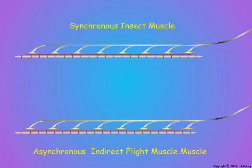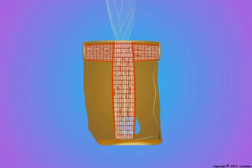Let us see what this means with a set of the antagonistic indirect flight muscles, using a lateral view from inside the thorax. Here we shall show changes in the thorax that are closer in magnitude to real movements, to demonstrate the antagonistic responses of the indirect flight muscles.